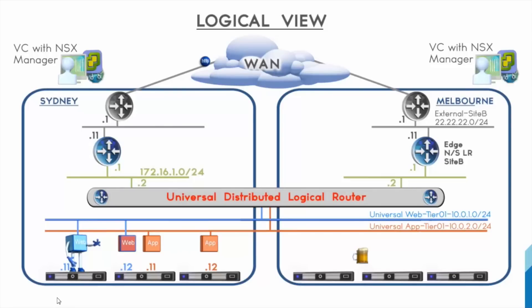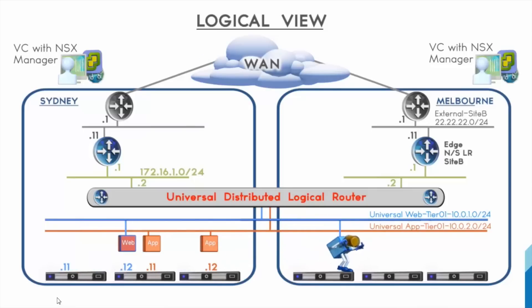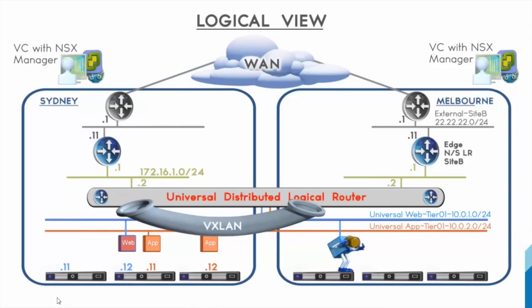Now we're going to move an application from site A to site B. The vMotion runs across, but what it doesn't realize is the packets are still going to come via the primary site suboptimally through VXLAN and hit the VM unexpectedly. So what we're going to look at is solving the ingress optimization in the event an application moves to a secondary site, so we can attract traffic to the correct data center without having to go through VXLAN packet forwarding to hit that VM.